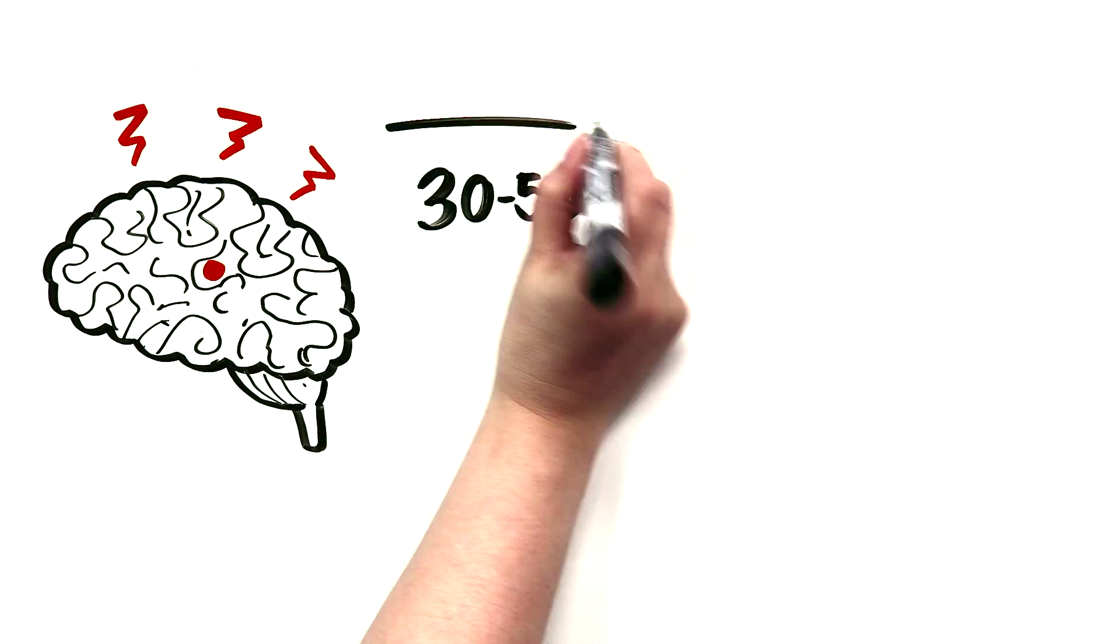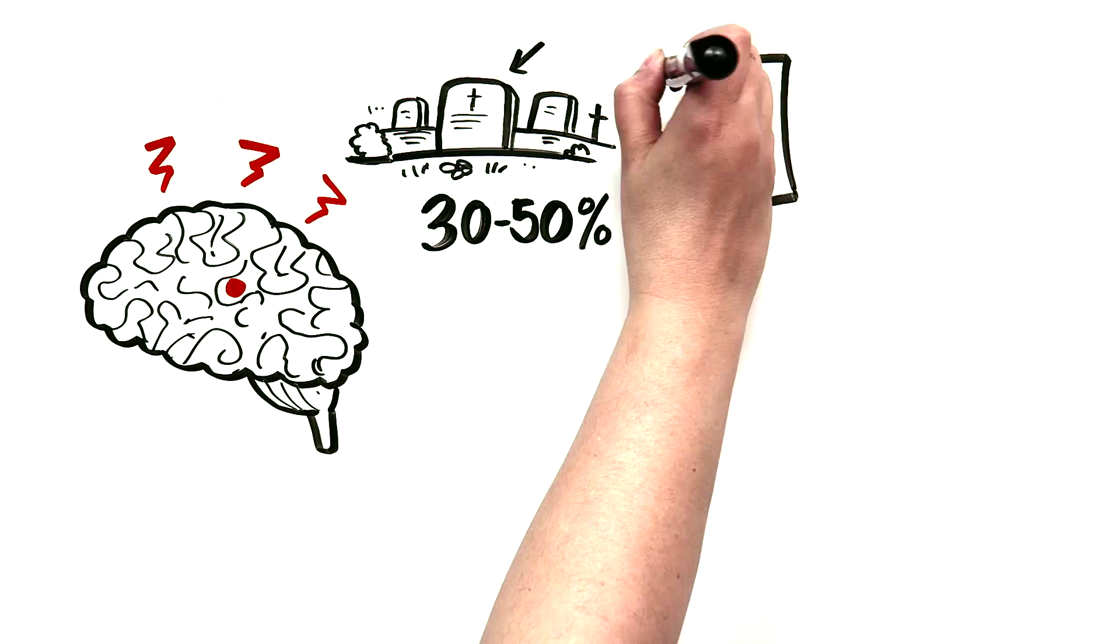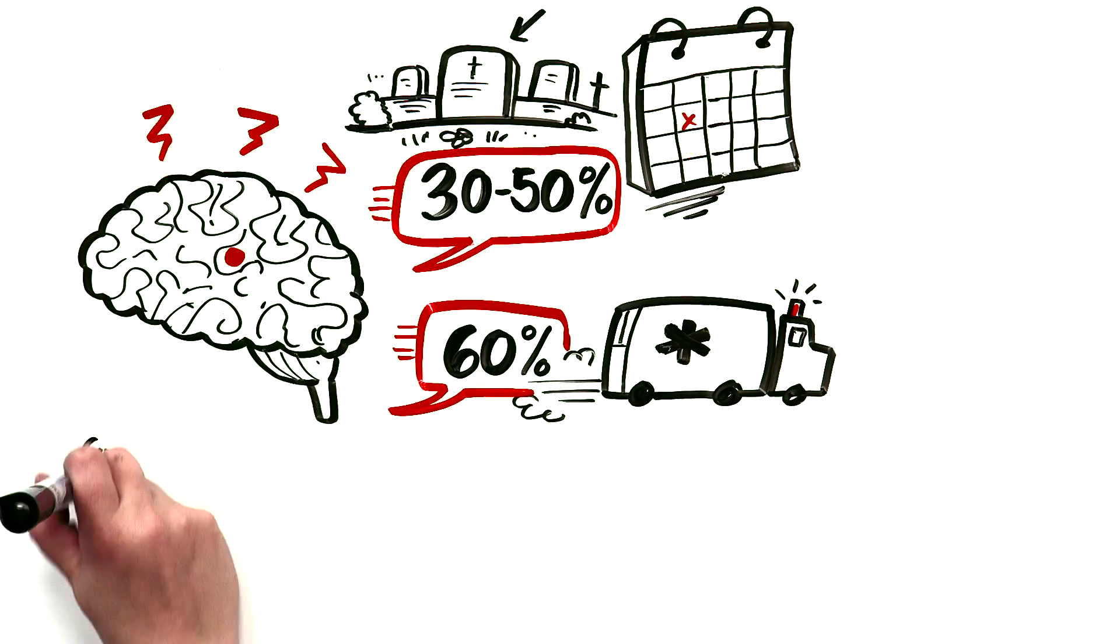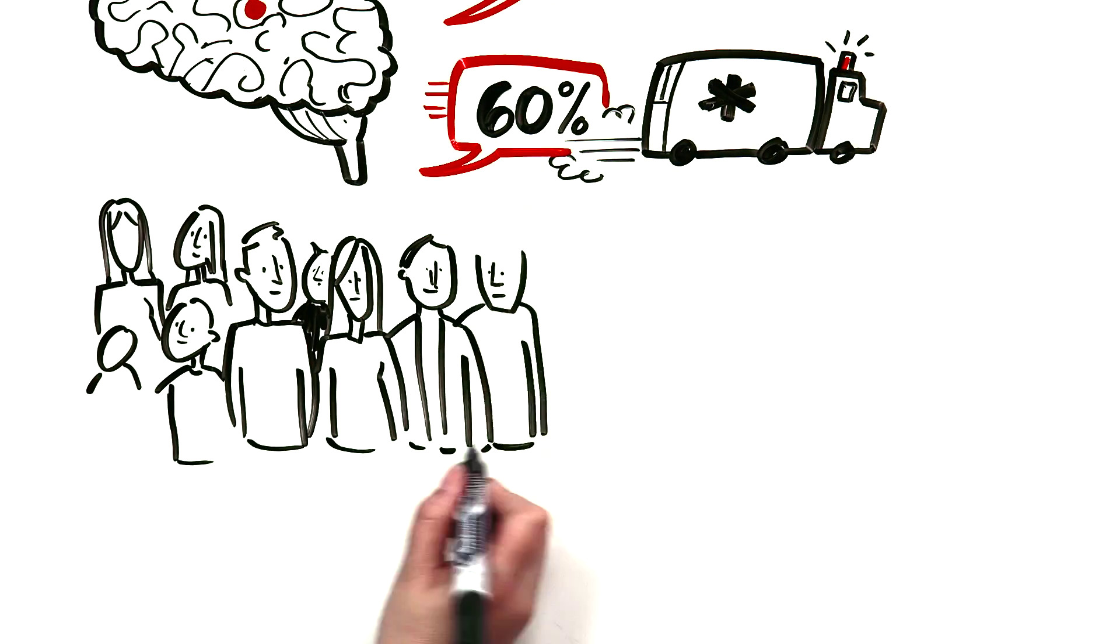It is important for patients to understand that 30-50% of AFib strokes are fatal within one year and 60% of them are disabling. This is roughly double the numbers that we see with non-AFib stroke.